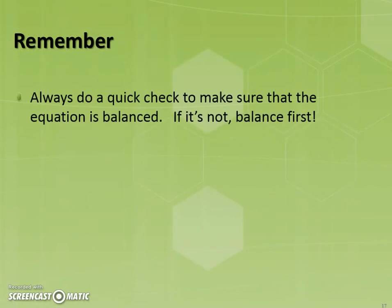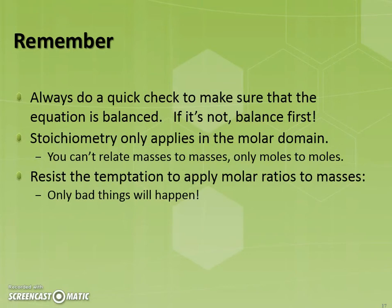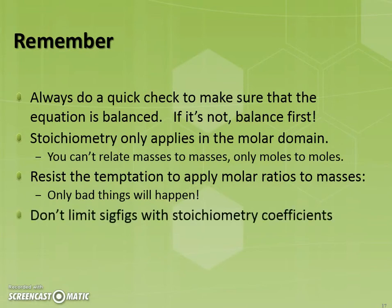A few final tips: always make sure that the equation is balanced — if it's not, you need to balance it before you calculate your reactants and products. Remember that stoichiometry only applies in the molar domain; you can't relate masses to masses directly, only moles to moles. Resist the temptation to apply your molar ratios — your stoichiometry term — to masses, as only bad things happen when you try to do that. Finally, don't limit your significant figures with your stoichiometry coefficients. Those coefficients are essentially precise terms with unlimited significant figures; you need to only concentrate on your masses with regards to significant figures.